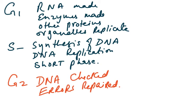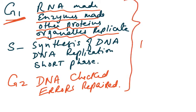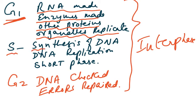In the G1 phase, a lot of RNA and enzymes are made as the cell prepares to divide. Organelles replicate — for example, if there are 10 mitochondria they become 20, and if there are 40 ribosomes they become 80. A lot of activity and amino acids are needed. G1 stands for Growth 1 and is part of interphase.